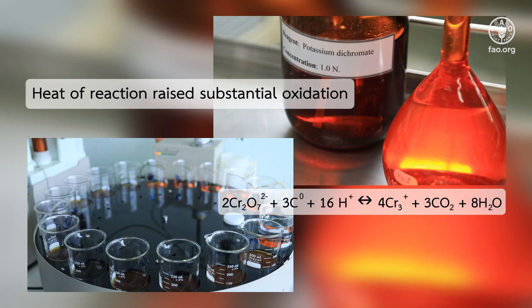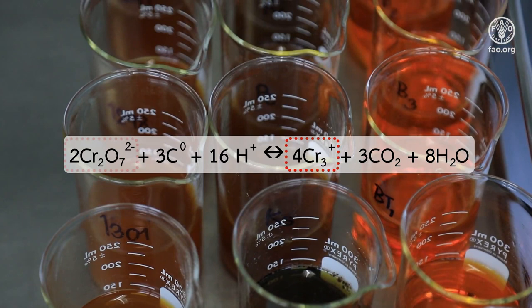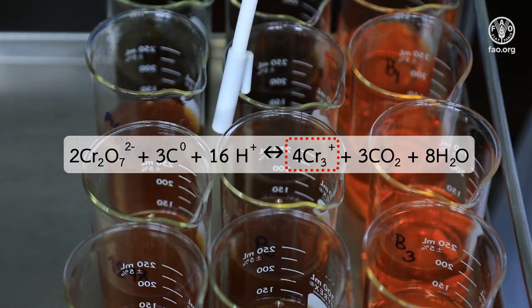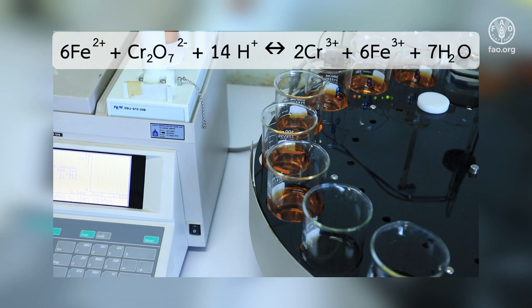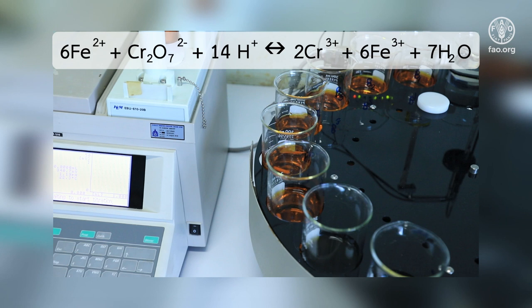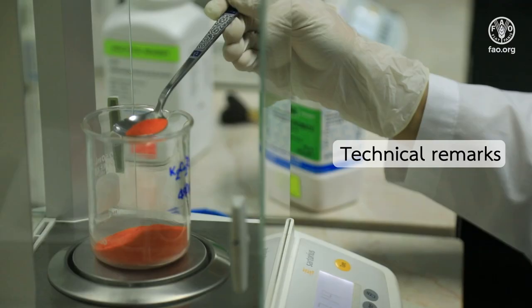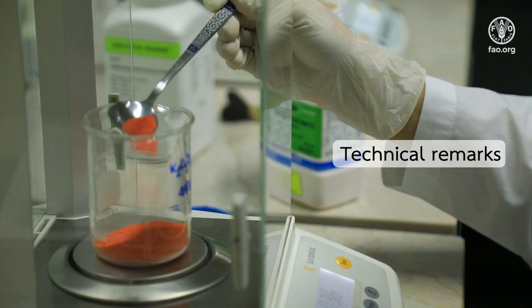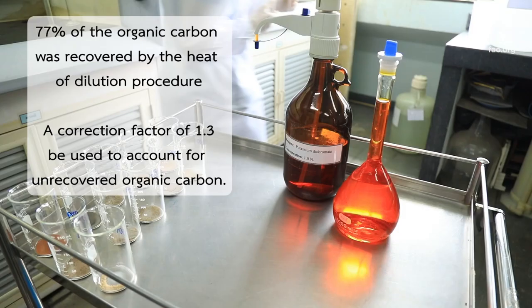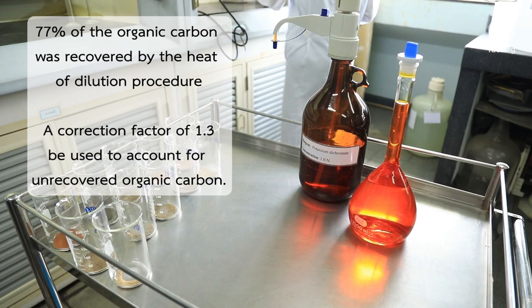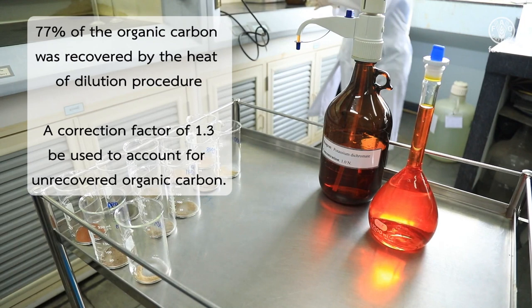The dichromate reduced during the reaction with soil is proportional to oxidizable organic carbon present in the sample. The organic carbon can then be estimated by measuring the remaining unreduced dichromate by titrating with ferrous sulfate or ammonium ferrous sulfate using diphenylamine or phenanthroline ferrous complex as an indicator. Regarding this procedure, some points might be noted. Walkley and Black found that on average about 77% of the organic carbon was recovered by the heat of dilution procedure.